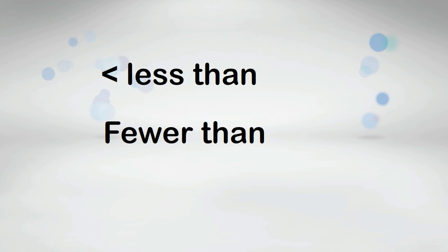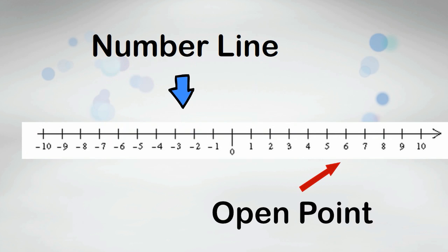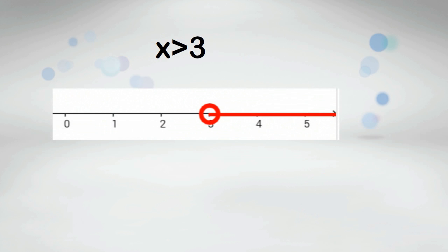On a number line if you have an open point it means the number is not included in the solution. For example, x is greater than 3. Notice that you use an open point because 3 is not included.